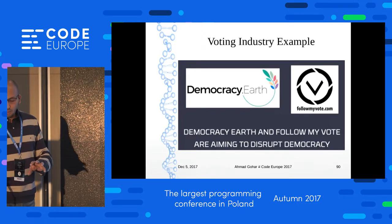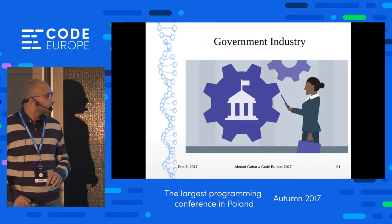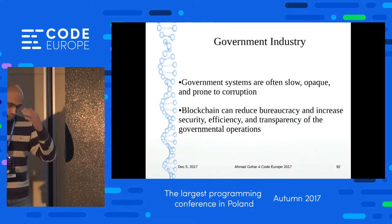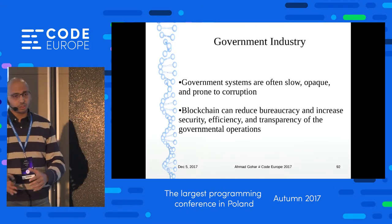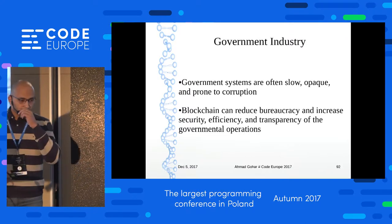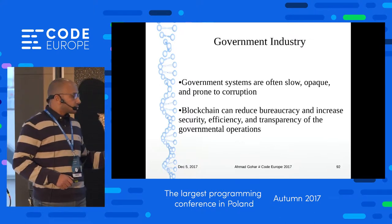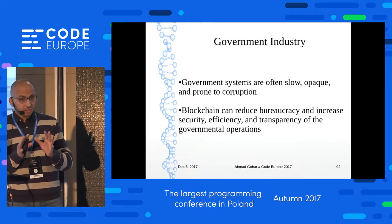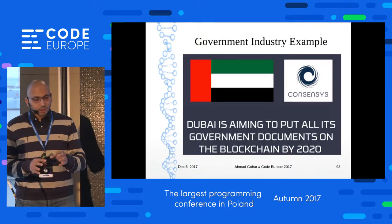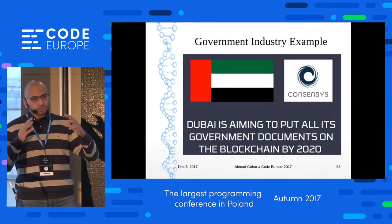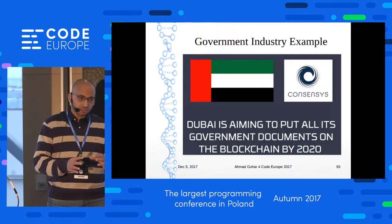The government industry is similar to the voting system but needs enterprise-level governance — work needs to be done in a secure and transparent way. The example I'm sharing is Dubai, which aims to put all its legal documents on a blockchain by 2020. Dubai is thinking about how to use blockchain not just as a data store but as a distributed storage for all its government documents.